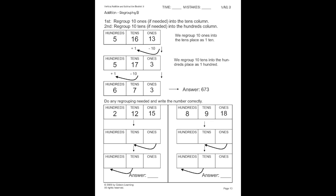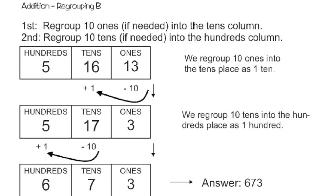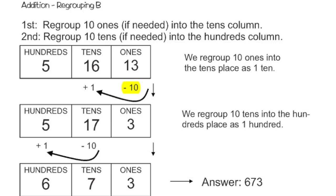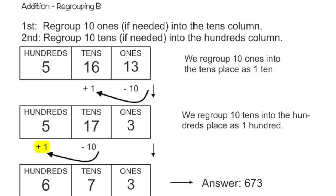Moving on to page 10 — there are 2 steps involved: regroup 10 ones into the tens column if needed, then regroup 10 tens into the hundreds column if needed. In this example, I have 500s, 16 tens, and 13 ones. Starting with the ones — can I regroup? Yes, I have 10 or more. I take 10 away from the ones and add 1 to the tens. So instead of 13 ones, I now have 3, and instead of 16 tens, I now have 17. I still have 5 hundreds. Now step 2 — can I regroup tens? Yes, I have 10 or more. I take 10 tens away and add 1 into the hundreds column. I end up with 3 ones, 7 tens, and 6 hundreds. My final answer is 673.